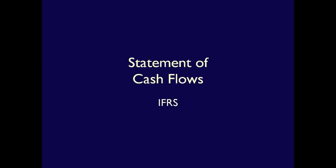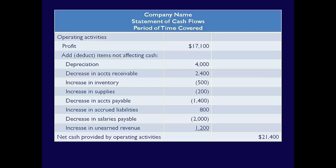Now that we understand the activities that make up the statement, we can look at an example. Note that the statement is so large that I've divided it into two slides so that you can see each activity better. As always, the statement starts with a heading, which must include the company name, the title of the financial statement, and the period of time covered. Similar to every financial statement except the Statement of Financial Position, this statement is for a period of time, most commonly one year.